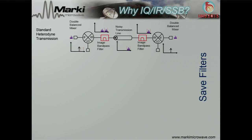The next slide answers the question of why use an IQ, IR, or single sideband mixer. The key reason is to eliminate filters that you would otherwise have to use. In a normal heterodyne transmission, you up-convert some baseband signal or low IF signal to your RF frequency. You have a limited bandwidth channel defined by the FCC, and you use a filter to eliminate your lower sideband.